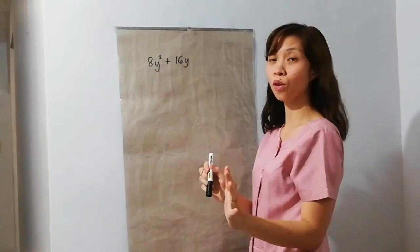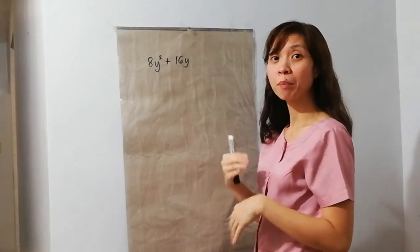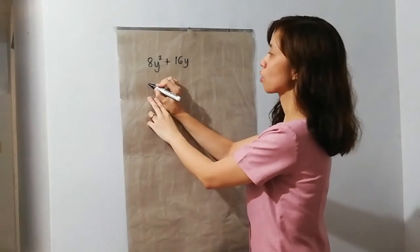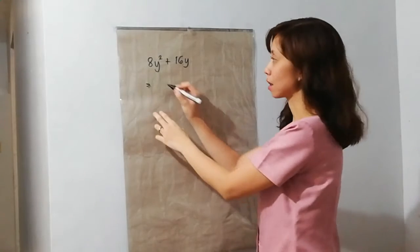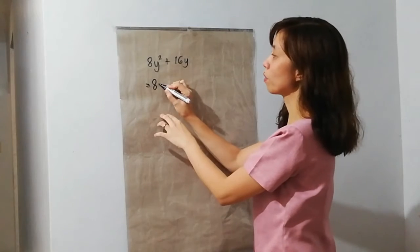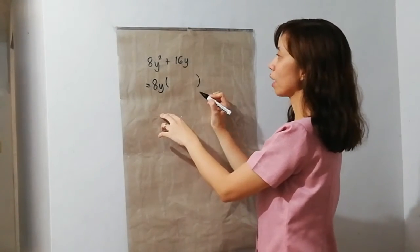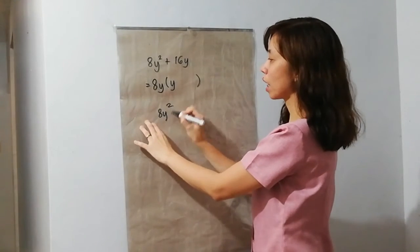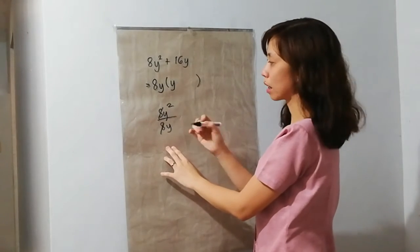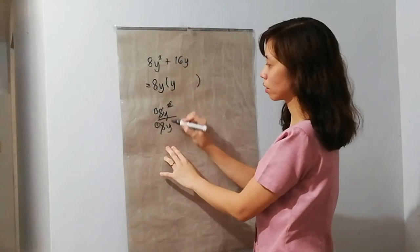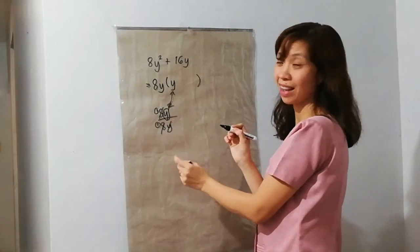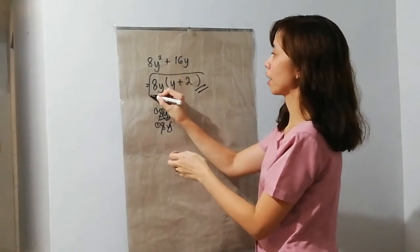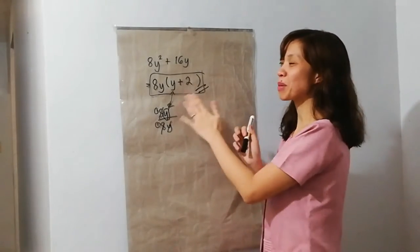Okay, nagsagot na kayo — tingnan natin kung tama yung sagot ninyo. Okay lang naman kung magkamali, practice makes perfect. So, we have 8Y squared plus 16Y — we only have 2 terms. Common factor of 8 and 16 is 8. And then, Y squared — meron tayong Y din dito, common factor nyan is Y. So, pwede na tayong mag-divide. 8Y squared divided by 8Y — may matitira ka pang Y. 8 divided by 8 cancel — 1 na lang yan. Y squared divided by Y, may matitira ka pang Y. Plus 16 divided by 8 is 2. Y divided by Y is 1. So, we have 8Y times the quantity of Y plus 2.